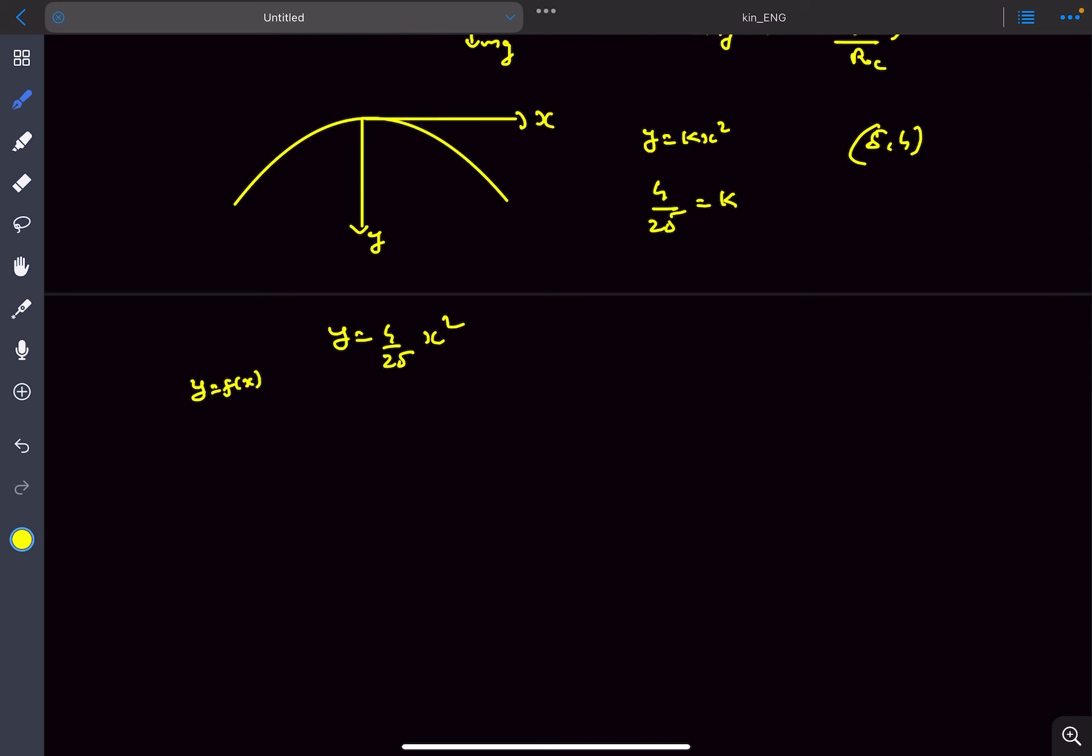For some curve y equals f of x, the formula for finding the radius of curvature is 1 plus the slope squared to the power 3 by 2 upon the double derivative at that point.